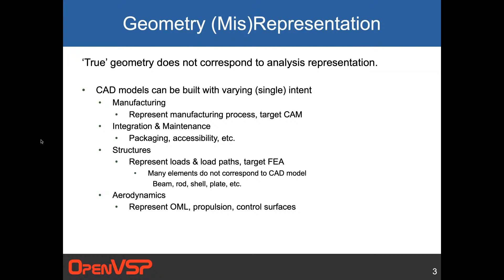In fact, most geometry is misrepresented by the analyses that we do, and that's okay for the most part. CAD models are typically built with a single intent. You might build one CAD model to represent manufacturing, another for integration and maintenance, packaging, accessibility. Another CAD model might represent the structures, and yet another for the aerodynamics to represent the OML, propulsion, and control surfaces. That's a tremendous duplication of effort.